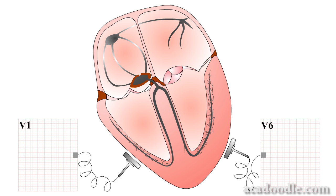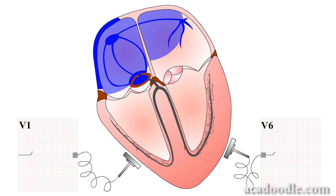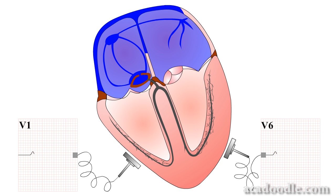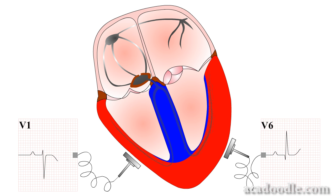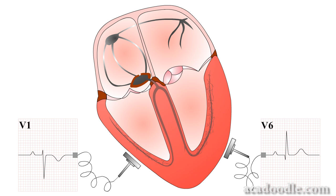The leads of the ECG machine are designed to detect and record these two waves of cardiac electrical activity. The depolarisation and repolarisation waves spread through the heart in a highly predictable pattern, and to understand the ECG readout, the pattern of spread of cardiac depolarisation and repolarisation need to be understood.